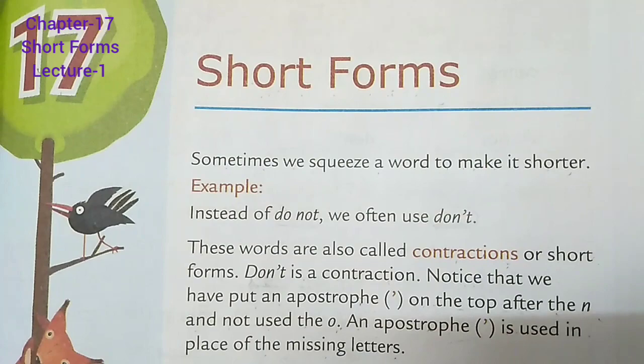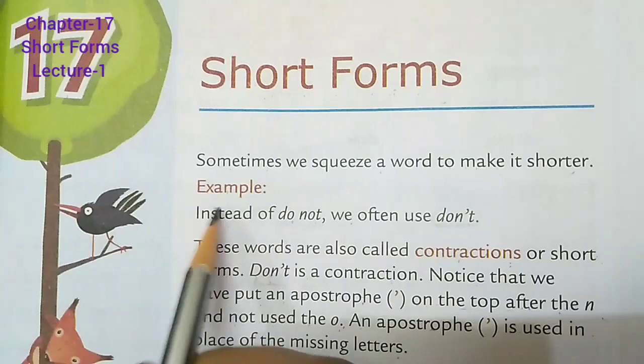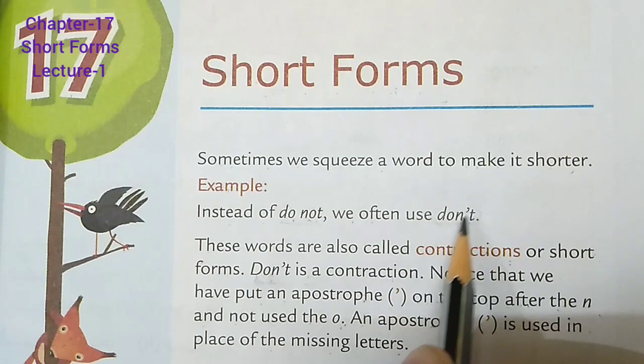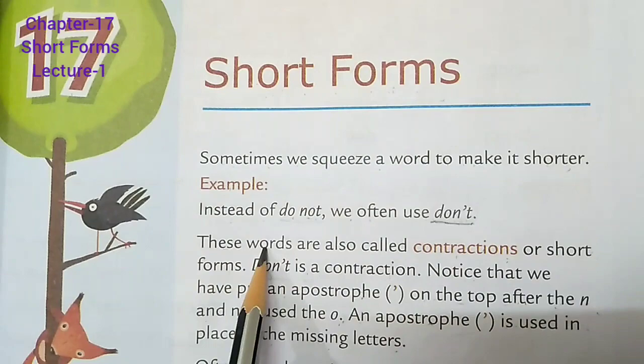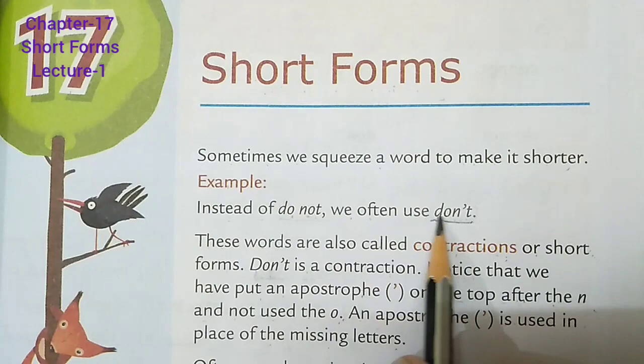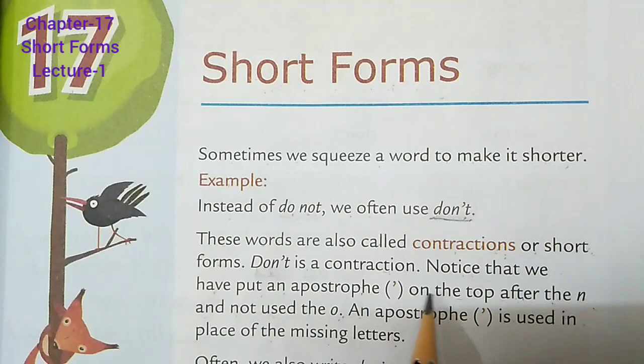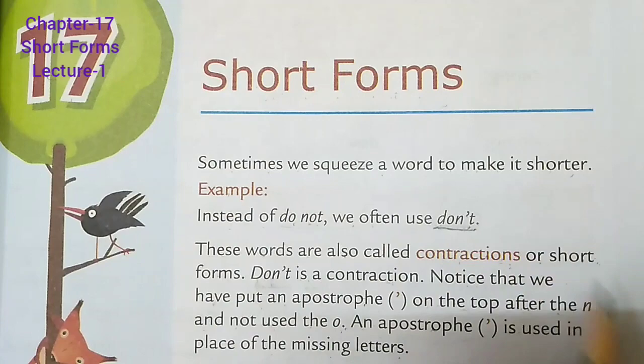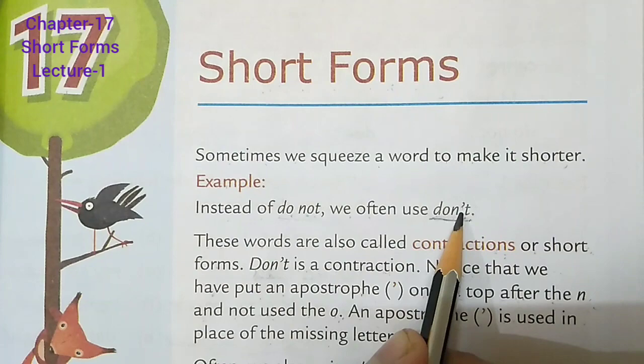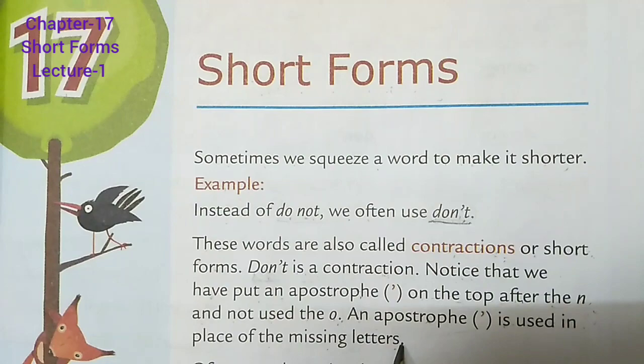For example, instead of 'do not', we often use 'don't'. These words are also called contractions or short forms. 'Don't' is a contraction. Notice that we have put an apostrophe on the top after the 'n'. We have not used the 'o' — the 'o' is not written. The apostrophe is used in the place of missing letters.